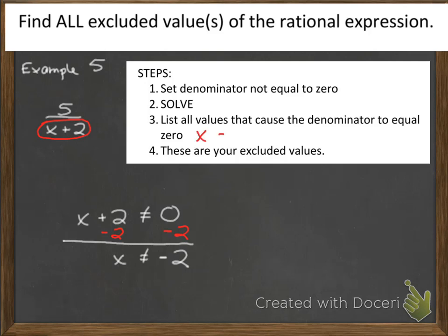If I let x be equal to negative 2, then I'm dividing by 0, which is undefined. So again, in this problem, I only have one restricted value, and that restricted value is negative 2.